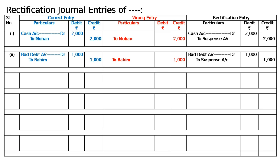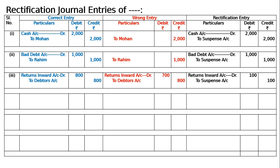Third entry: an addition in the returns inward book has been undercast — cast 100 short. The correct entry would be Sales Returns account debited to Debtors account for, say, 800. But due to the undercast, Returns Inward account was debited only 700 to Debtors account 800. To rectify, we write Returns Inward account debited to Suspense account, 100. Being Rs 100 posted less in returns inward account, now rectified by debiting 100 to Returns Inward account, all other amounts and accounts being correct.